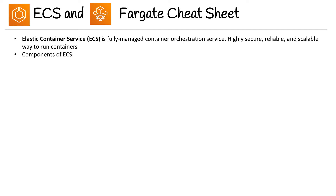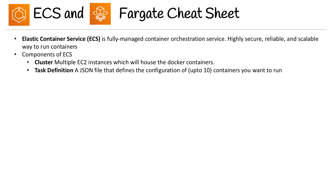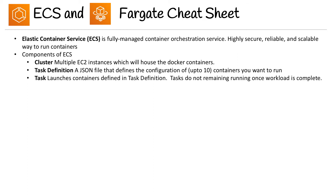The components of ECS are as follows: a cluster — multiple EC2 instances that will house the Docker containers; a task definition file — a JSON file that defines the configuration of up to 10 containers that you want to run; tasks — which launch containers defined in the task definition and do not remain running once workloads complete; and services — which ensure tasks remain running.